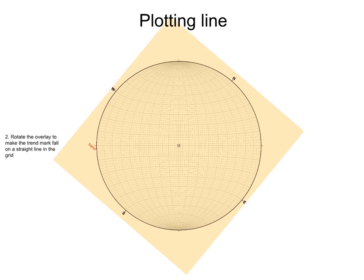Then, we rotate the overlay to make this mark fall on either a horizontal or vertical straight line in the grid. It does not matter which straight line you choose, just select one that is close to the trend mark. Then, from the primitive we count inwards the plunge of the line, in this case 40.